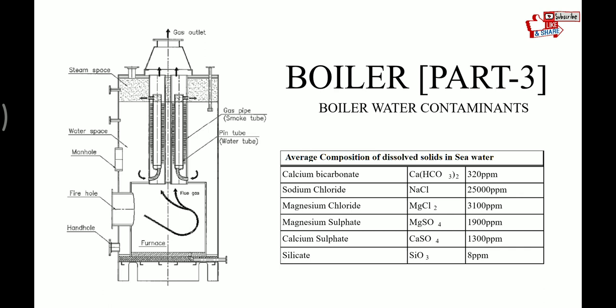Boiler water mostly gets contaminated by seawater. Let's see the average composition of dissolved solids in seawater. First is calcium bicarbonate at 320 ppm, sodium chloride at 25,000 ppm, magnesium chloride at 3,100 ppm, magnesium sulphate at 1,900 ppm, calcium sulphate at 1,300 ppm, and silicate at 8 ppm. These values are approximate values.